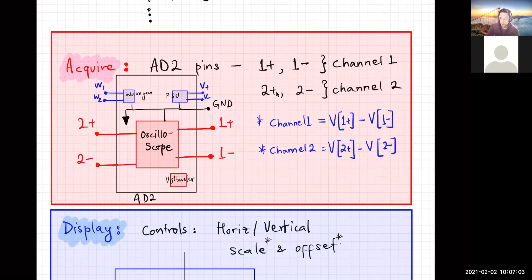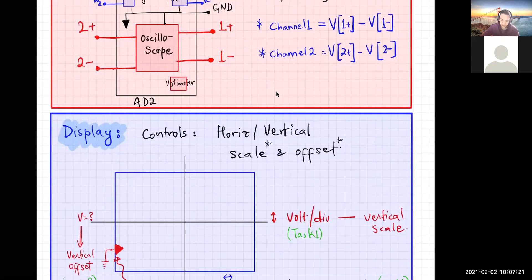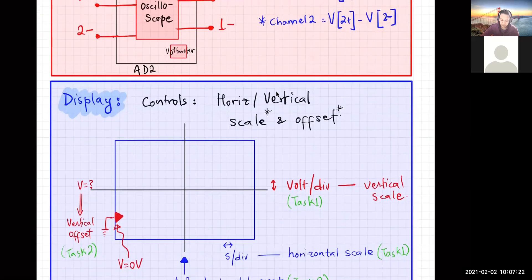So if you wanted to measure a voltage across a resistor in your circuit, you would connect the 1+ and 1− pins to the two ends of the resistor.